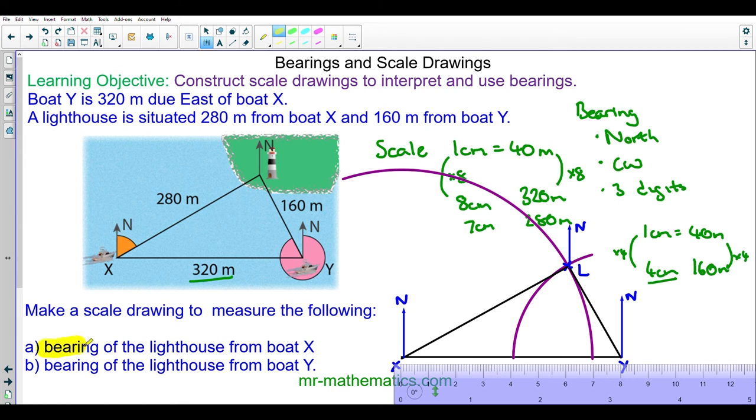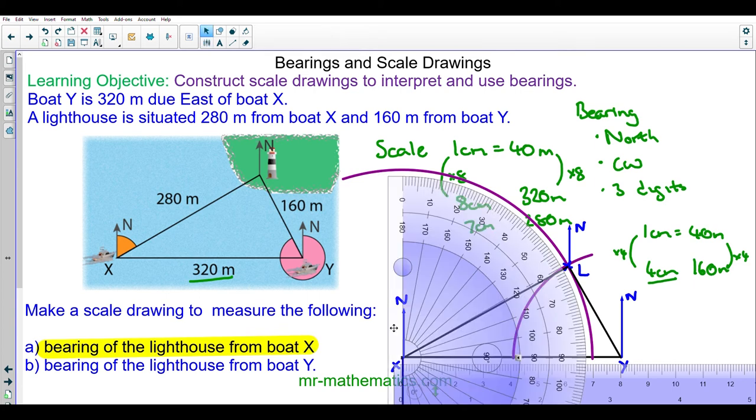Now we can work out the bearing of the lighthouse from X. We'll measure the angle from the north line going in a clockwise direction. You can see this is 60 degrees. It has to be three digits. So 0 hundreds, 6 tens, 0 units - 060 degrees.